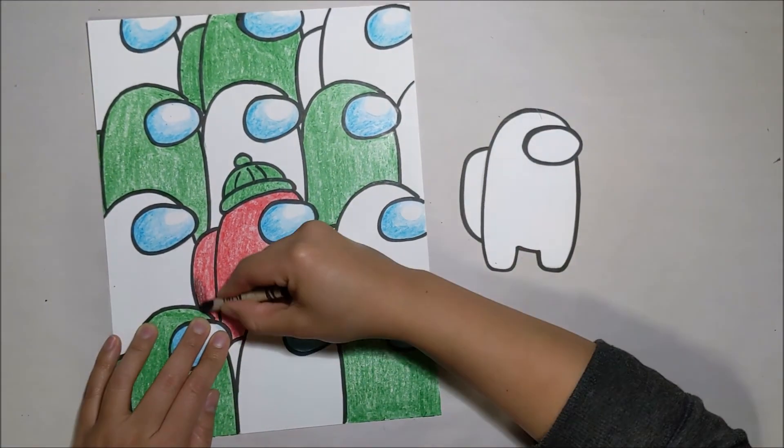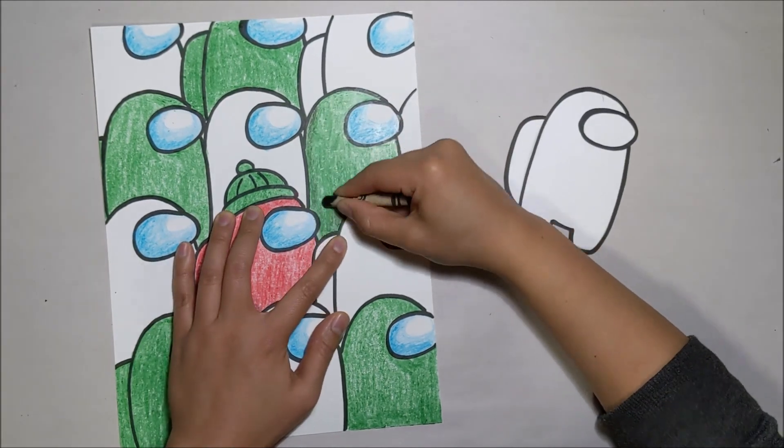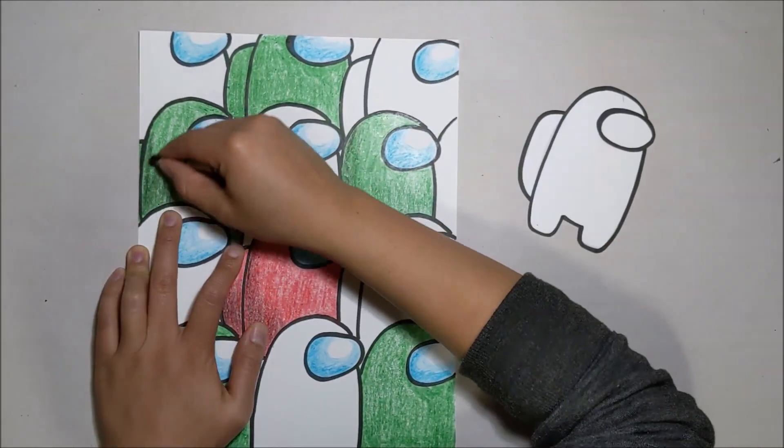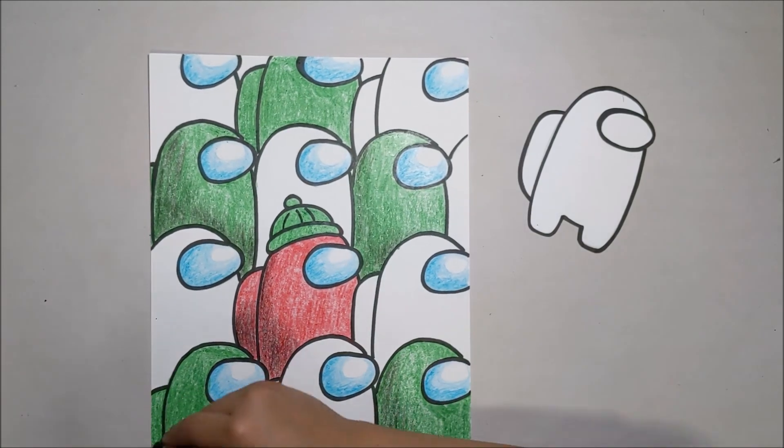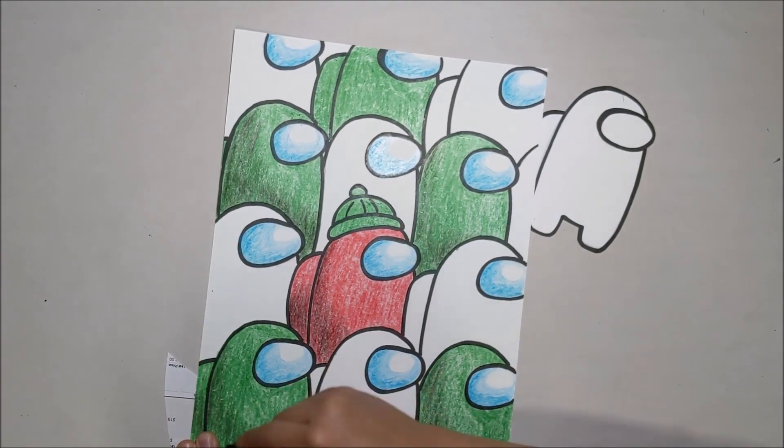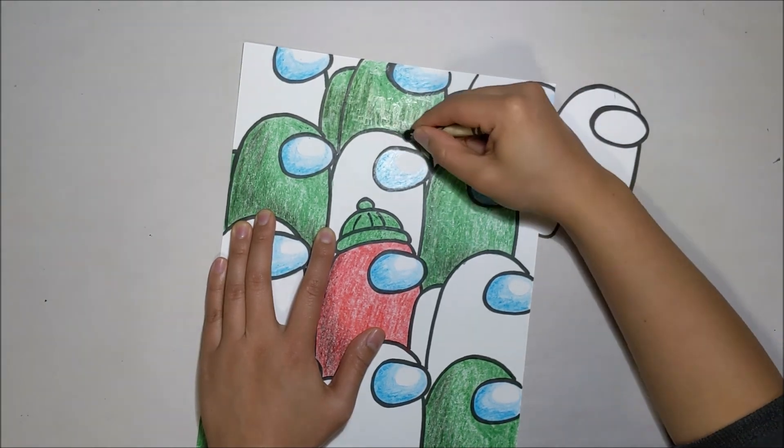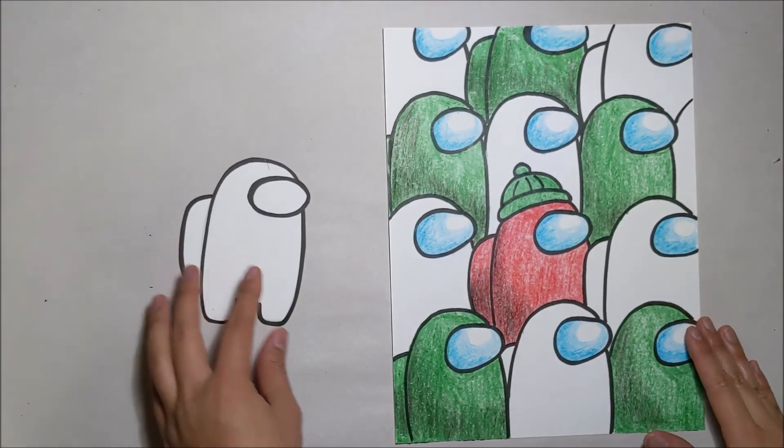For the finishing touches I am using my black crayon to create some shadows on the left and the bottom side of each crew member and a little bit on the backpacks. For the white crew members I used a very light gray to create the shadows. With all the shadows in you are done!